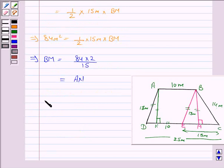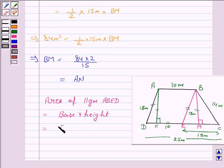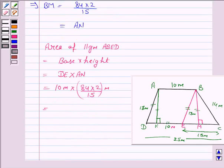Now we can find the area of the parallelogram ABED which is equal to base into height. Now base is DE, and height is AN. Now DE is parallel to AB, so DE is equal to AB which is 10 meters. And AN is 84 into 2 upon 15 meters. Simplifying this, this becomes equal to 112 meter squared.